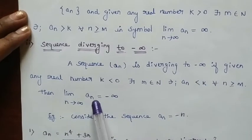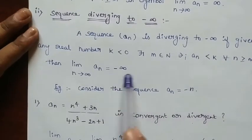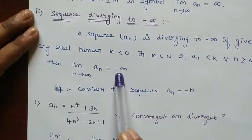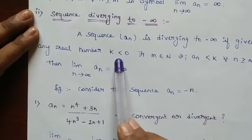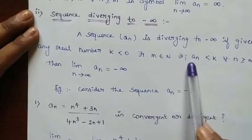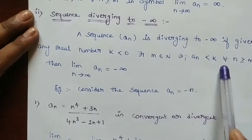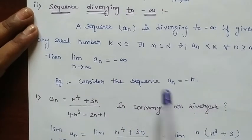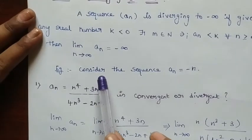Then limit N tends to infinity AN equals minus infinity. The Nth term will diverge to minus infinity. The important conditions here are: the K value should be less than 0 and AN less than K — our sequence will be lesser than the real number K. These conditions are very important in sequence diverging to minus infinity.